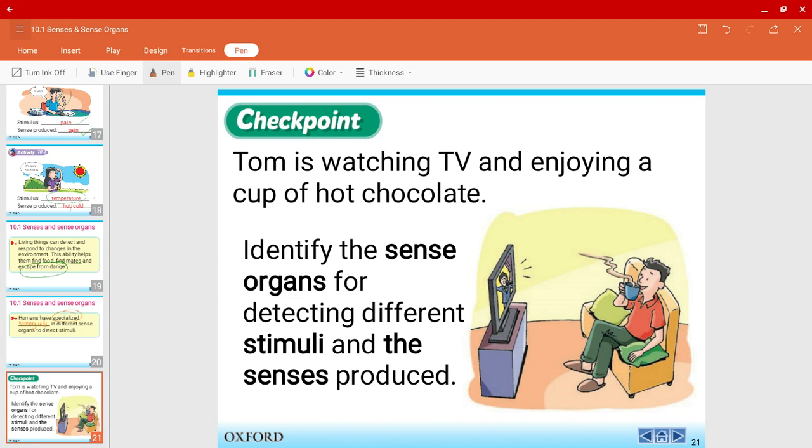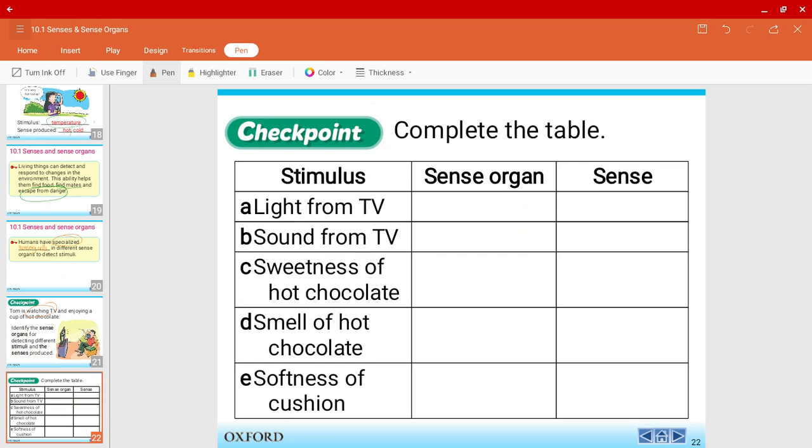Now let's do the checkpoint question to wrap up this part. Tom is watching TV and enjoying a cup of hot chocolate. I guess that's what most of us are doing nowadays. Identify the sense organs for detecting different stimuli and the senses produced. This should be fairly simple. The stimuli are on the left and let us find the sense organs and the sense. First, question A, the light from the TV. What sense organ are you using to detect the stimulus? This should be the eye, of course, and the sense produced is the sight. Question B, the sound from TV. The sense organ is the ear and the sense, of course, is hearing.